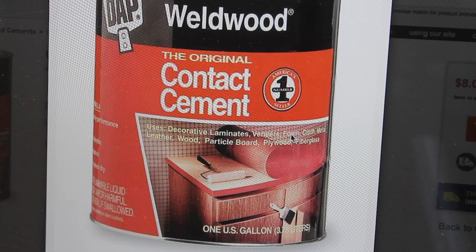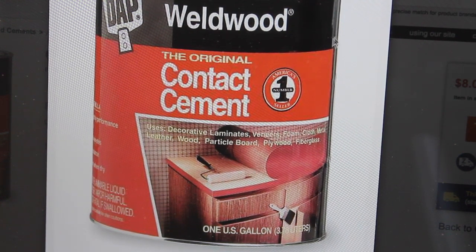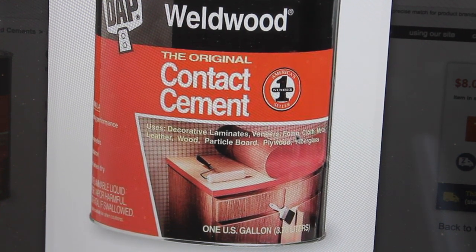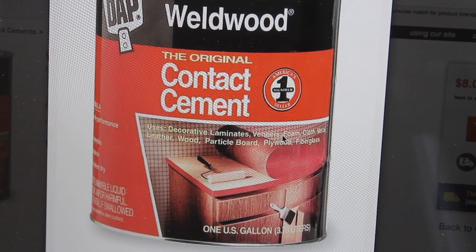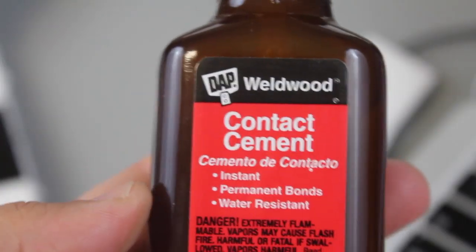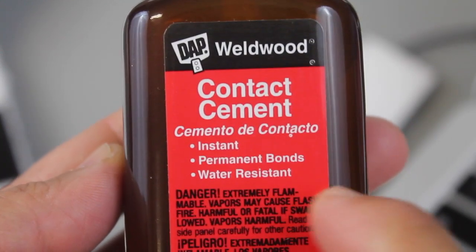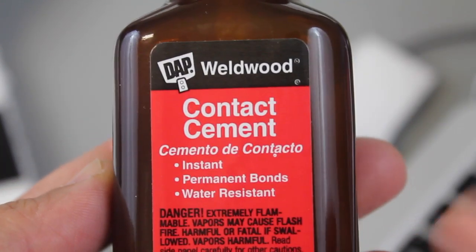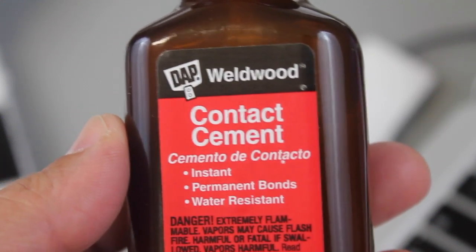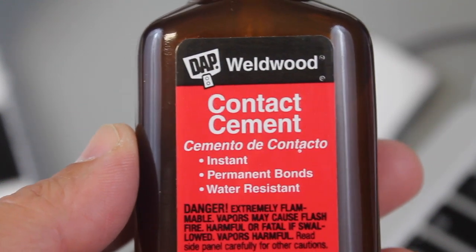Let me point out that Home Depot had this big can available, it was about 15 bucks and you can see that it says on the can that it's compatible with foam. I opted for the cheaper version, this is about four dollars, and you'll notice on here that it doesn't say anything about foam. So if you're not aware, you definitely want to make sure that when using any sort of glue that it's foam safe.